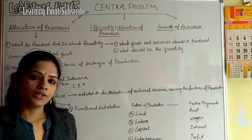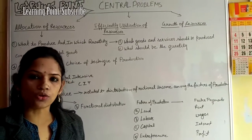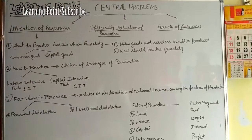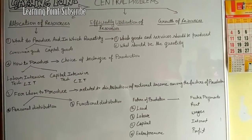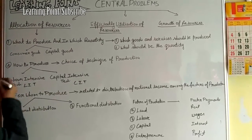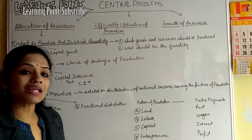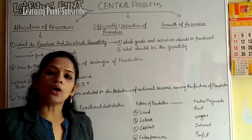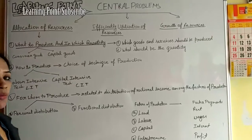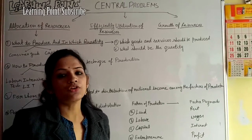According to the 12th class syllabus, we will study the first problem — allocation of resources — because this is what students are required to discuss. The allocation of resources problem has three types. The first is: what to produce and in what quantity? Any economy must make this decision with its limited resources — which combination of goods to produce with the given resources.